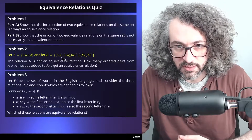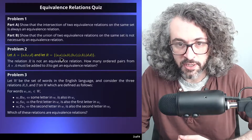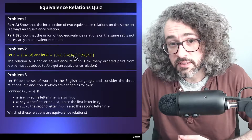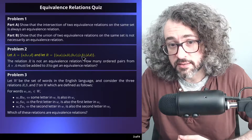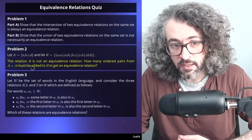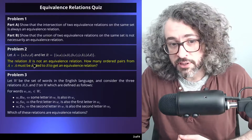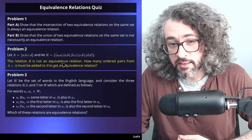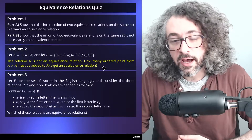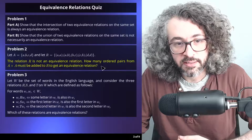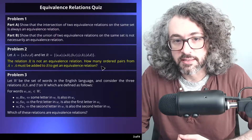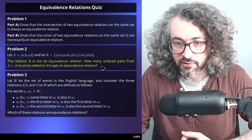The relation R contains the ordered pairs (a,a), (a,b), (b,c), (c,b), and (d,d). The relation R is not an equivalence relation. How many ordered pairs from A cross A must be added to R to get an equivalence relation?